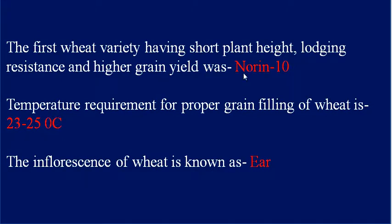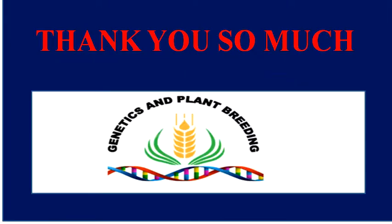The temperature requirement for proper grain filling of wheat is 23 to 25 degrees centigrade. The inflorescence of wheat is known as an ear. This concludes agronomy part one; part two will cover approximately 40 more questions.